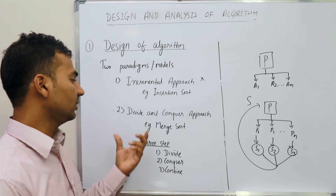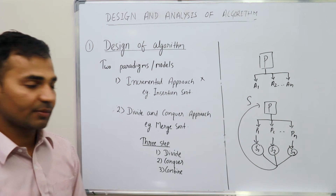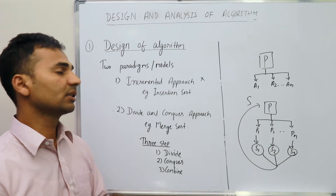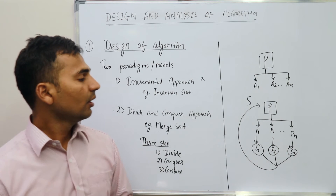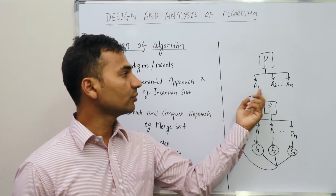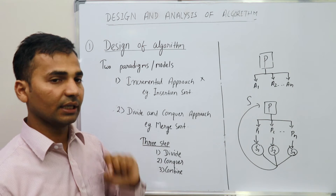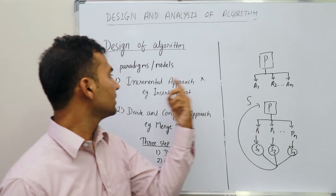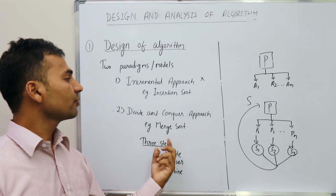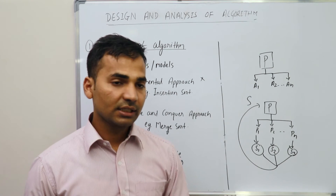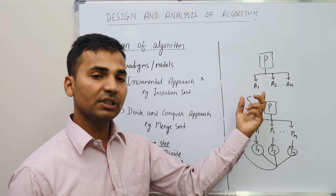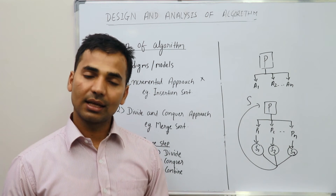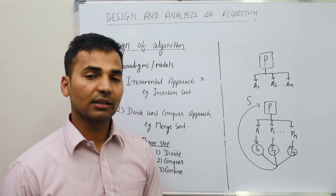We will talk in detail about the divide and conquer approach in later chapters. One example of divide and conquer is merge sort, and an example of the incremental approach is insertion sort. Among the algorithms designed to solve the sorting problem — A1 and A2 as incremental, A3 and A4 as divide and conquer — the question is which one is better. Finding the better algorithm is what we call analysis of an algorithm.